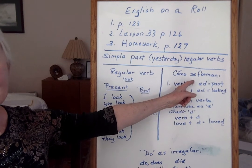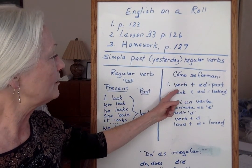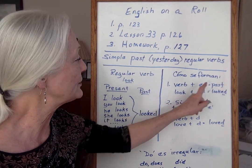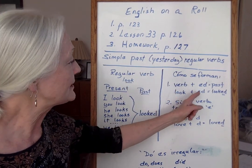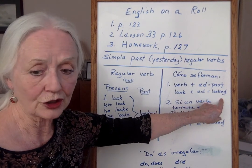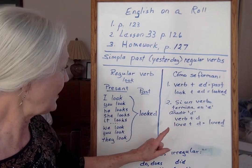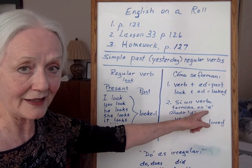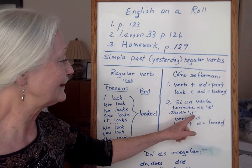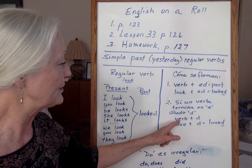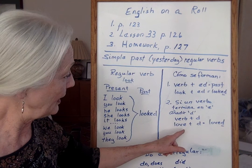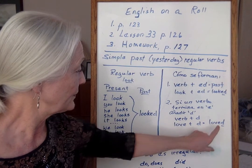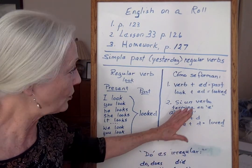Como se forman? Number one: verbo más -ed — that's the pasado. So here we take the verb 'look' plus -ed: looked. That's one way. And here, si un verbo termina en la letra I — añadir -d. For example: verb 'love' plus -d: loved. Es solamente en -d aquí.